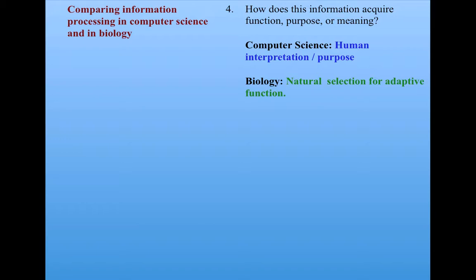Rather, it's the natural selection for adaptive function that gives rise to the meaning of the information. So that really is the meaning of the information, say, for an ant colony when it's creating foraging trails. Natural selection has shaped ants to have the mechanisms that create that information and that interpret that information, because it has adaptive function for individuals and for the species.